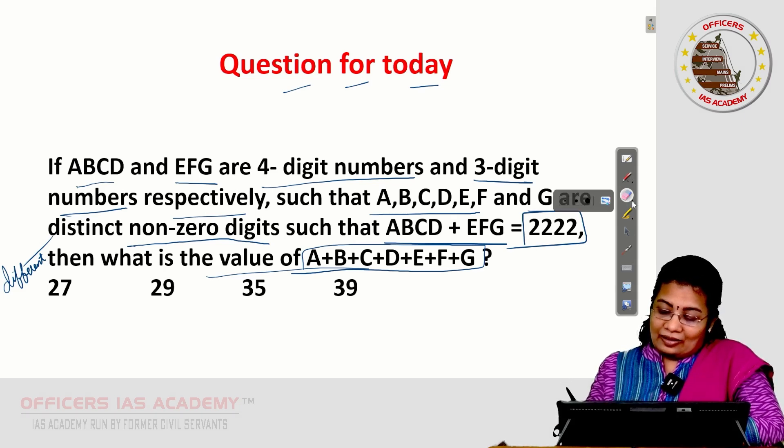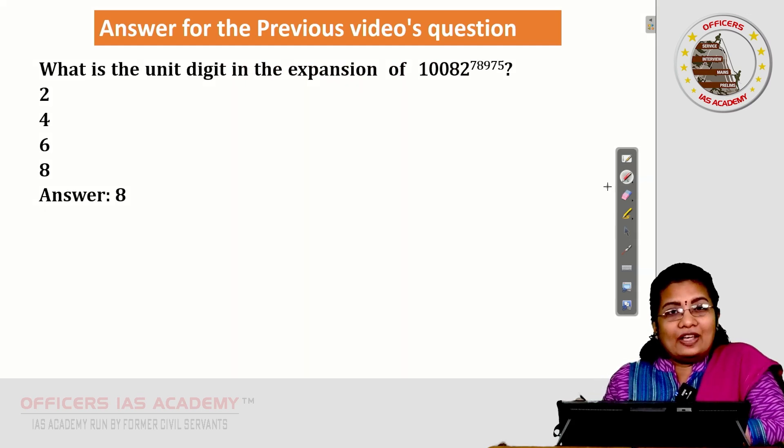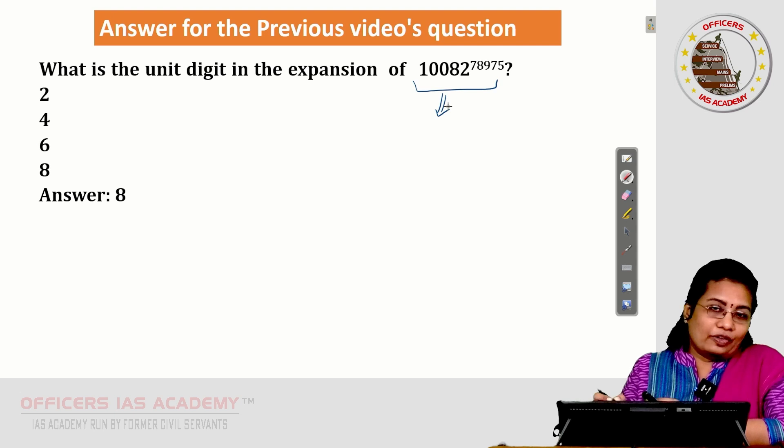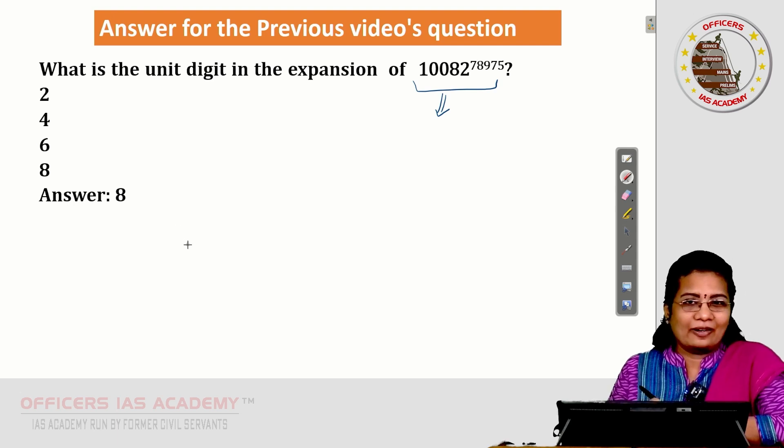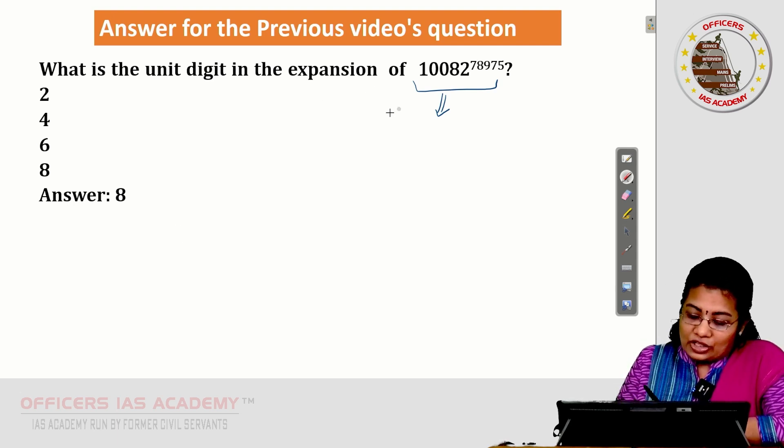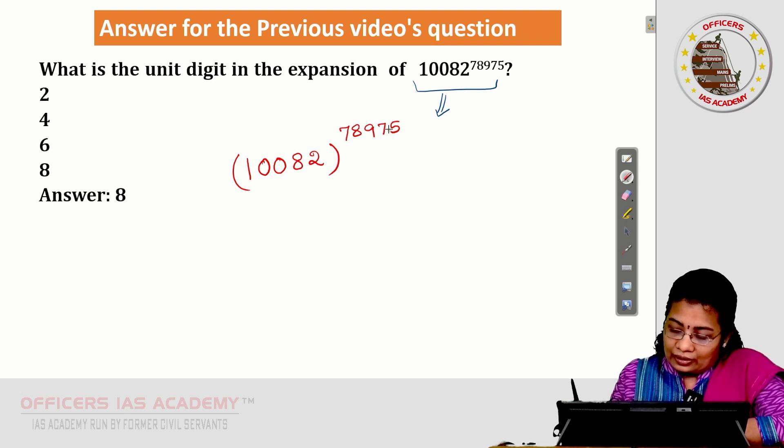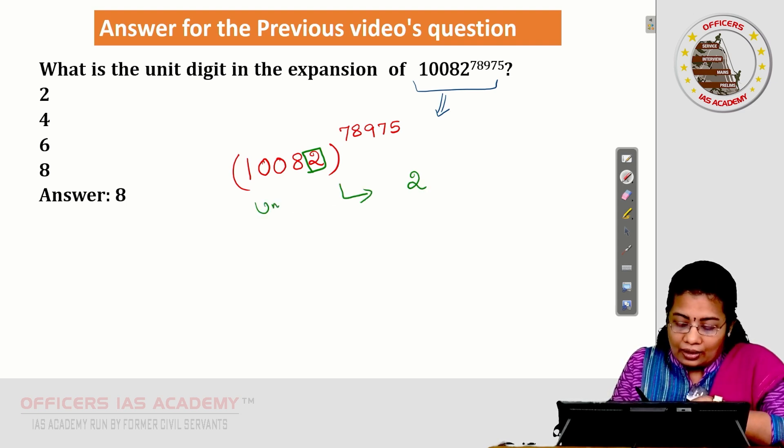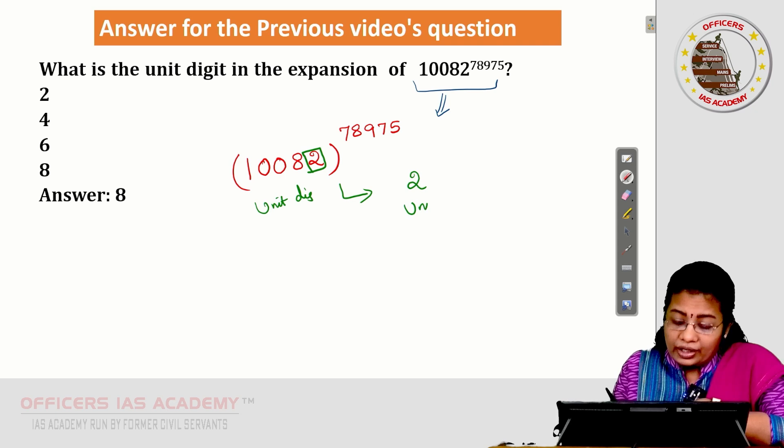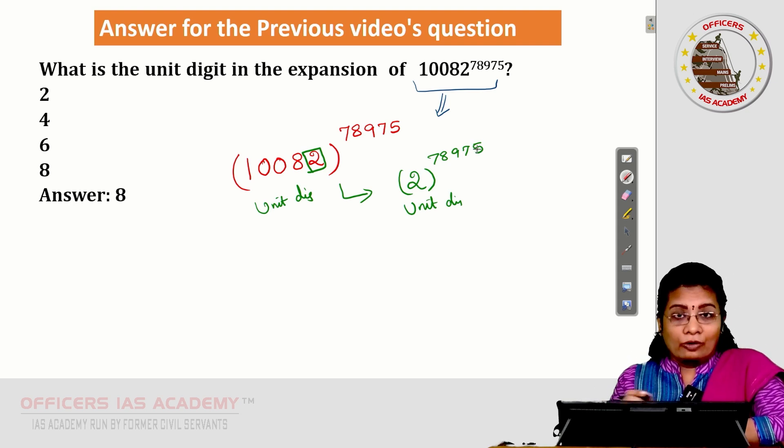The next thing is answer for the previous video's question. This question was asked in the previous video. Many of you have commented the answer. The actual explanation with the answer we can see now. What is the unit digit in the expansion? 10082 to the power 78975. As usual we will be considering only the unit digit.